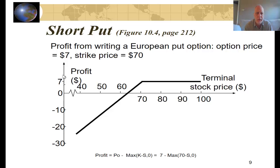Shorting a put — selling somebody else the right to sell you the stock at $70 — gives a maximum profit of $7. Your break-even is again at $63, and your maximum loss is 7 minus 70, or a maximum loss of $63. The profit from selling a put works like an insurance company: you collect the premium, but if the equivalent of a car wreck takes place — meaning the stock price falls below $70 — you have to pay out on the option.